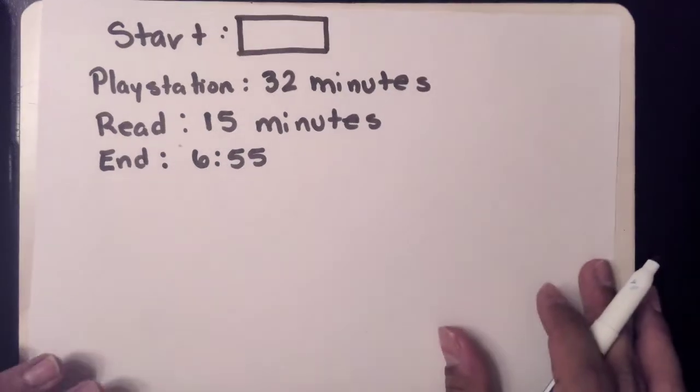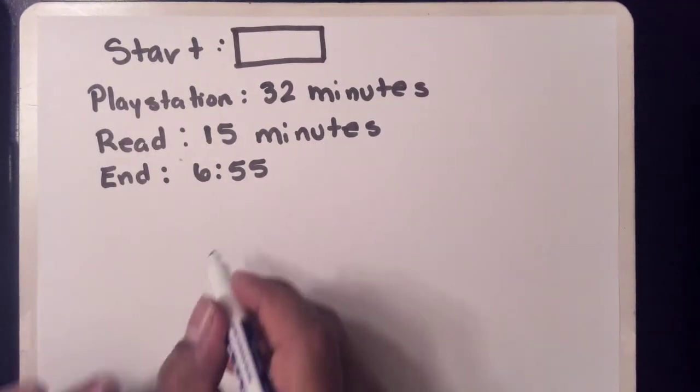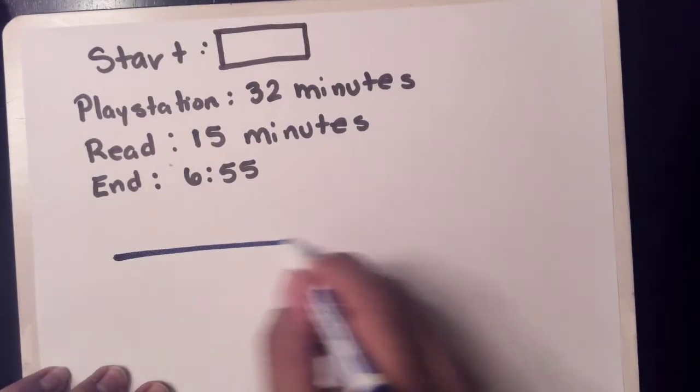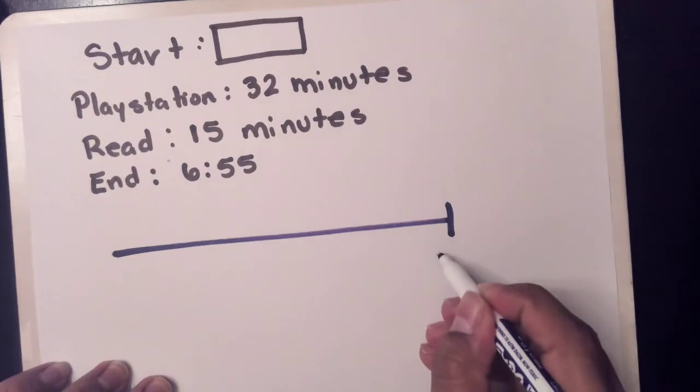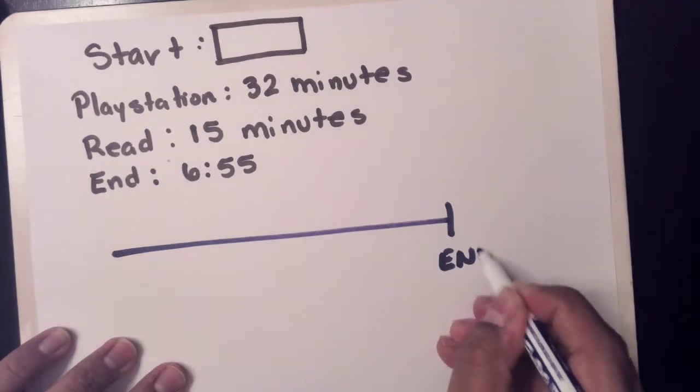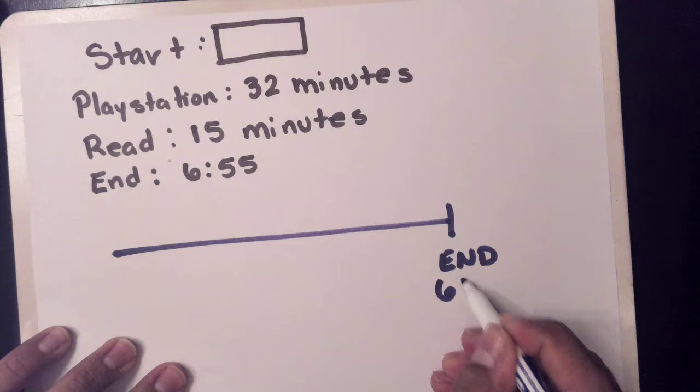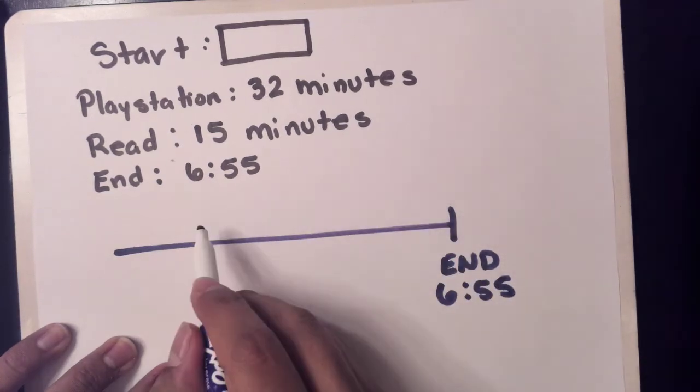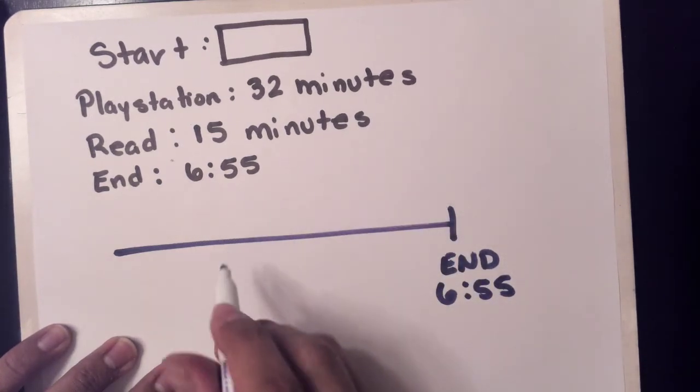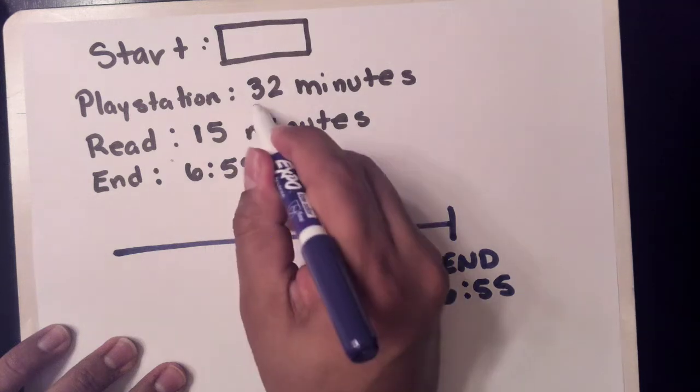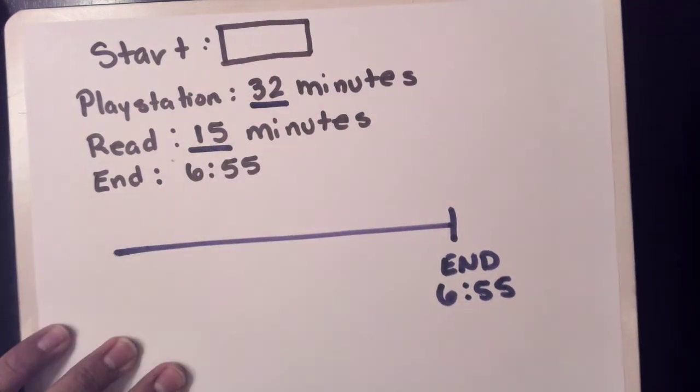But what happens if we need the starting time? Now we have the ending time, which is right here at 6:55. On the number line, when we go to the left, we subtract. So instead of adding, I'm going to be subtracting 32 minutes for PlayStation and 15 minutes for reading.